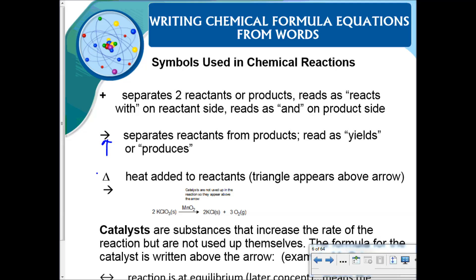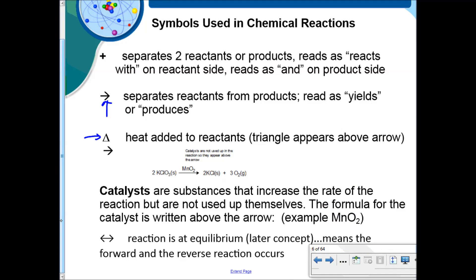The arrow here is the yield sign, it reads as reacts or produces, it separates the reactants and the products. When we see this little delta sign over the yield sign, that means heat's been added, and then we also have symbols for catalyst. Catalysts are things that can increase the rate of reaction but they are not used up, so if there's a catalyst we actually write it above the yield sign as well. And then we have this double arrow that means reactions at equilibrium. That's a later concept but it just means that the forward reaction and the reverse reaction occurs at the same rate.